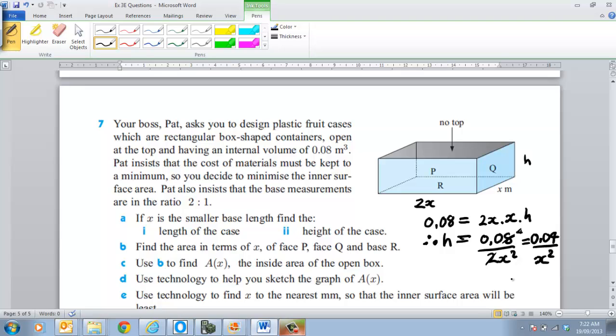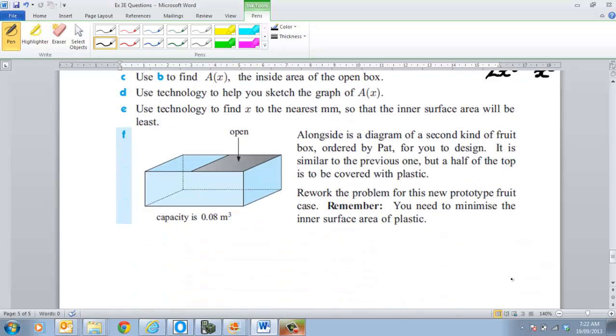The next thing I ask you to do in Part B is find the area in terms of x of face P, Q and R. Alright, so they are the faces. Alright, so P is the front face which is going to be obviously 2x times by the height h, which is there. So let's do that down the bottom here so we can get a bit of room. So P is going to be equal to 2x times by h. Now we know h is equal to 0.04 all over x squared. So you can cancel that out with that. And that works out to be 0.04, actually 0.08 times by 2 all over x. So that's P.